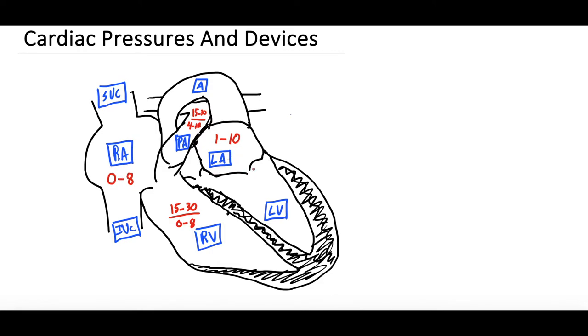And then through there it goes through the mitral valve into the left ventricle, where we have a pressure of 100 to 140, over three to 12. And that's about our systolic pressure. The left ventricle then contracts, shoots blood through the aortic valve, through the aorta, into the rest of the body. And that pressure is just your normal blood pressure. We're going to say 100 to 140, over 60 to 90 diastolic.